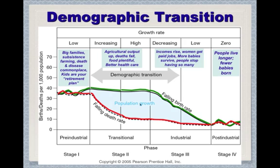Then we move into the beginnings of the industrial phase, where people can find jobs working off the farm. There's enough agricultural surplus to feed the cities, so people can move in, get jobs, and have higher incomes. With rising incomes, women get paid jobs, more babies survive, and as people see that their children are going to survive, they stop having so many kids and the birth rate falls.